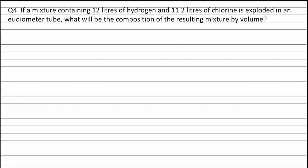Question 4. If a mixture containing 12 liters of hydrogen and 11.2 liters of chlorine is exploded in an eudiometer tube, what will be the composition of the resulting mixture by volume? The volume of hydrogen is 12 liters and the volume of chlorine is 11.2 liters.